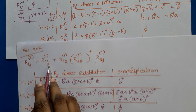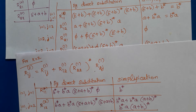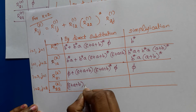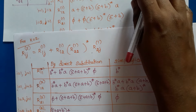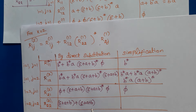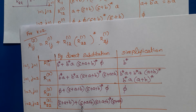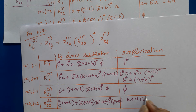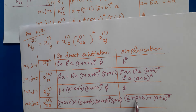For r22 to the power 2, i is 2 and j is 2. Substituting: r22^1 is epsilon plus a plus b, plus r22^1 which is epsilon plus a plus b, concatenated with r22^1 star (epsilon plus a plus b star), concatenated with r22^1 which is epsilon plus a plus b. Using the simplification epsilon plus r plus r* equals r*, the result is (a+b)*. So r22 to the power 2 is (a+b)*.